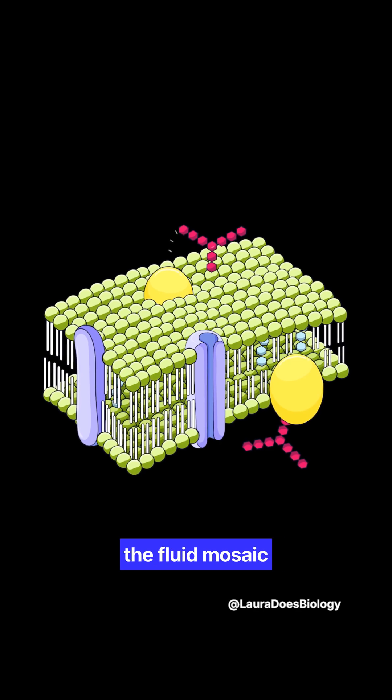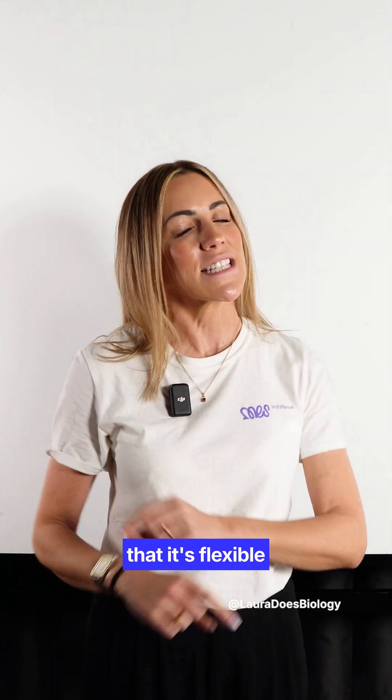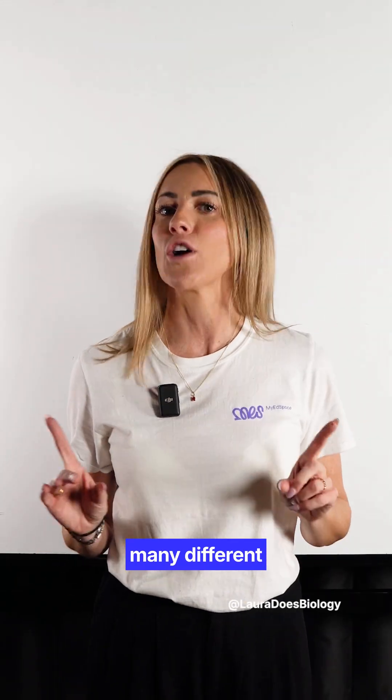The cell membrane is described using the fluid mosaic model, meaning that it's flexible and made up of many different components.